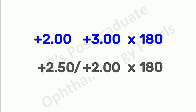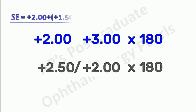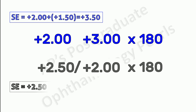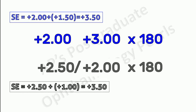Let us check the spherical equivalent to make sure that our calculation is correct. The spherical equivalent of the first prescription is plus 2 plus half of plus 3, that is plus 1.5, which gives us plus 3.5. The spherical equivalent of the second prescription is plus 2.5 plus half of plus 2, that is plus 1, which is again plus 3.5. So our calculation is correct.